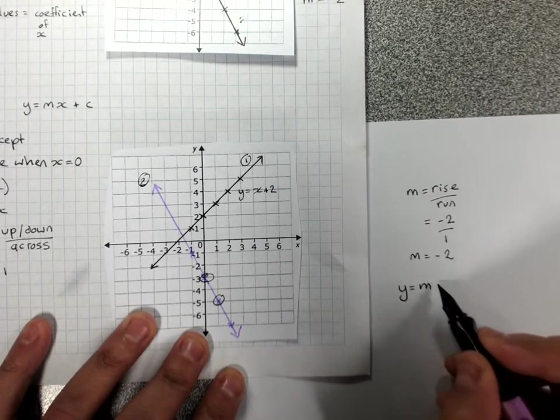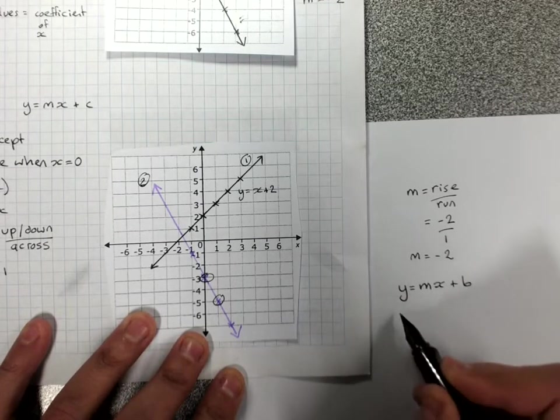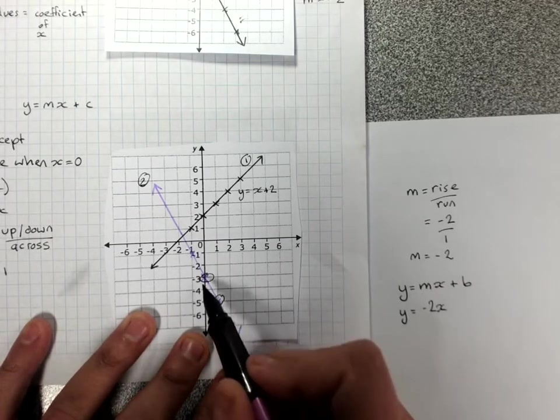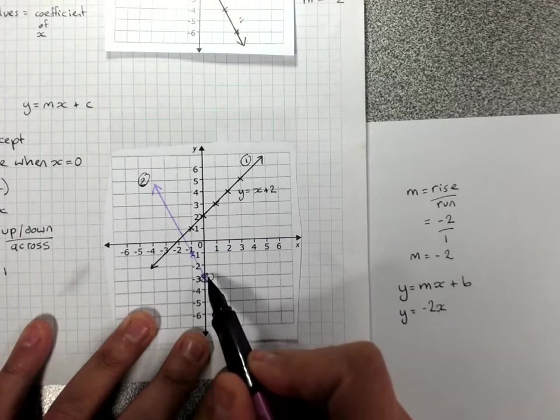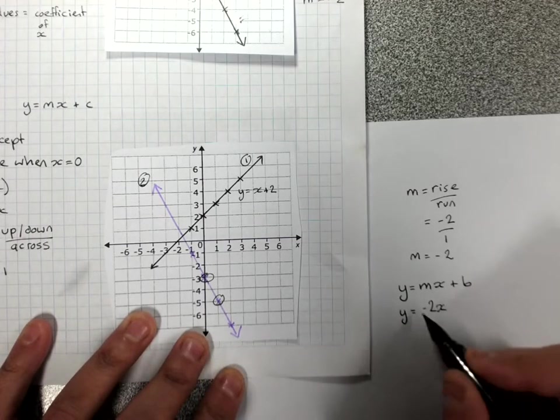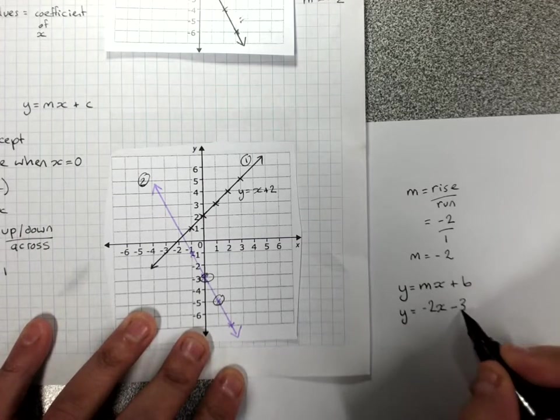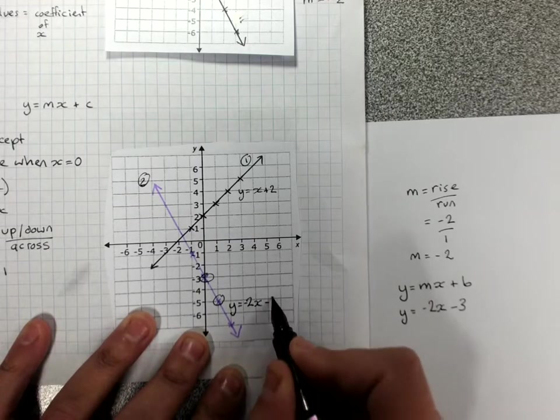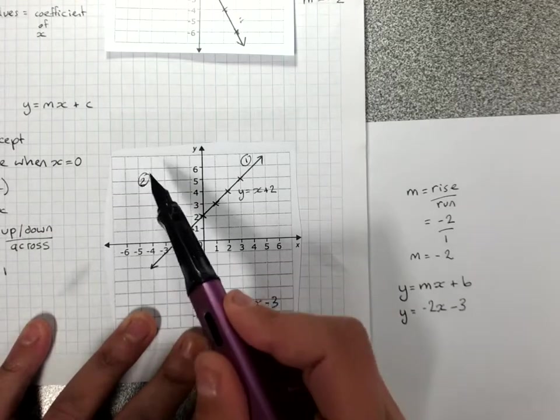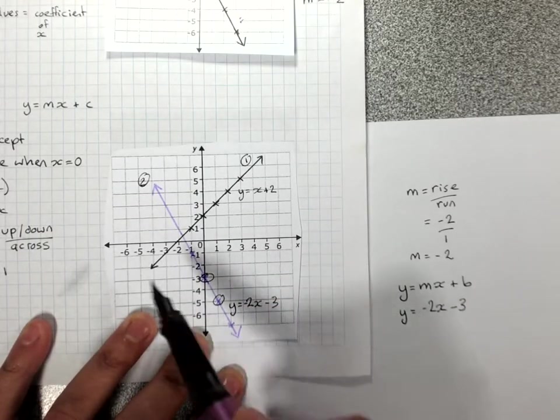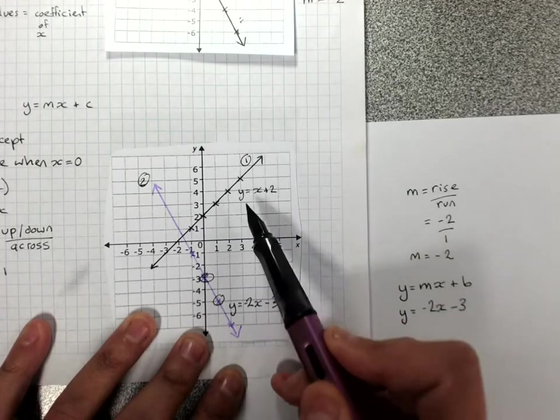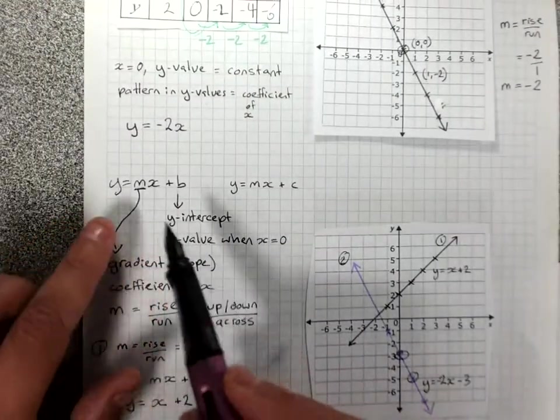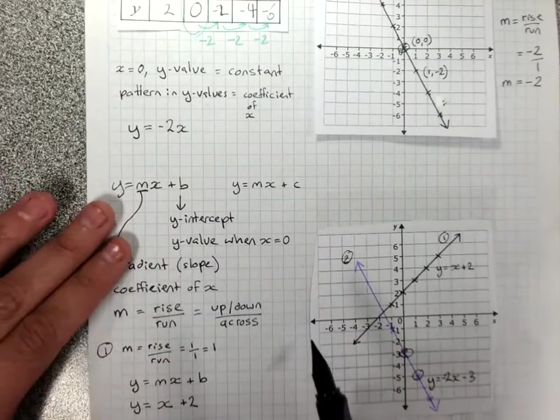Write the rule for any line, y equals mx plus b. Where the m is, we put our gradient. We check the y-intercept, it's negative 3. Y equals negative 2x minus 3. A line that slopes downwards will have a negative gradient. A line that slopes up will have a positive gradient. This is called the gradient intercept form of a line. And any straight line can be written like that.